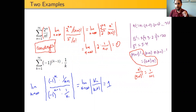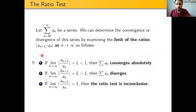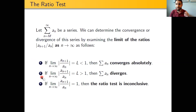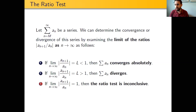This converges conditionally — it converges, but not absolutely; the absolute value signs would make it the harmonic series, which diverges. If we go back a slide, notice that the ratio test cannot draw a conclusion of conditional convergence — it can only ever conclude that a series converges absolutely or diverges. So any conditionally convergent series will be an example where the ratio test proves inconclusive. That is a major limitation of the ratio test. However, outside of that, the ratio test is a really excellent test and one that we will use a lot going forward.